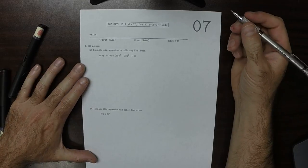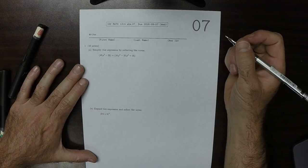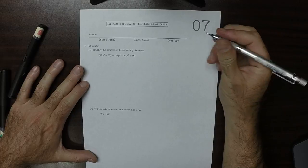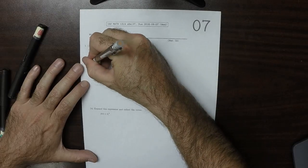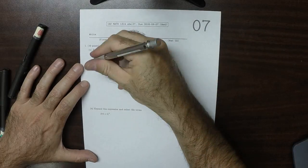This is the solution to Written Homework 7. Okay, so we want to collect like terms. So the first thing I'll do is drop the parentheses.